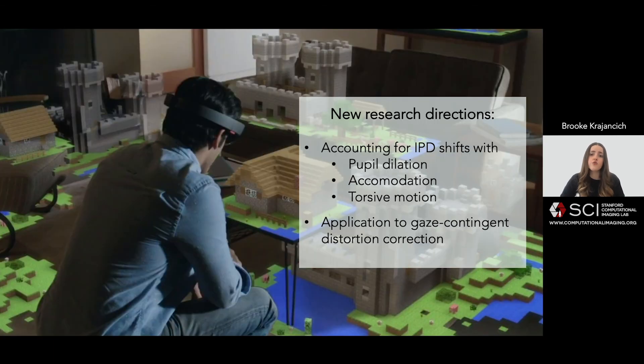We paved the way for new research directions in perceptually realistic rendering. For example, the centers of the pupils actually shift with dilation, meaning that IPD can also change with brightness or emotion changes. It would also be interesting to combine this work to model and correct optical distortion in a gaze-contingent manner.